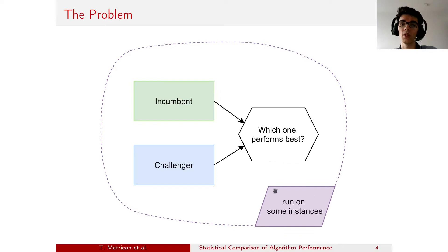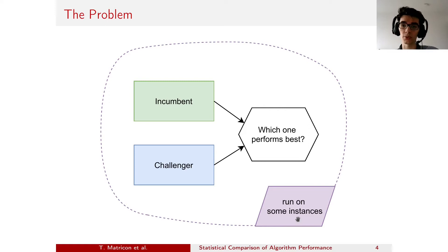Instead, we can pick or select randomly some instances and then run the challenger on that subset of instances. This would enable us to do the comparison at reduced cost but with reduced accuracy. We propose to tackle this problem in a principled manner and offer a ready-to-use toolbox.